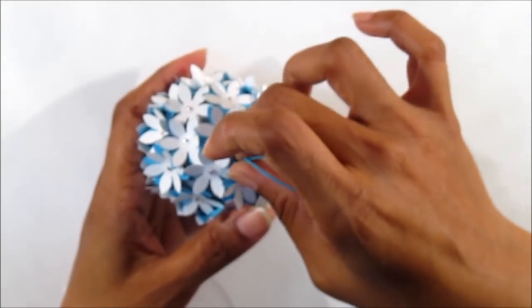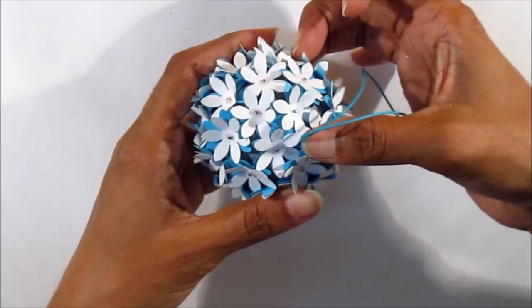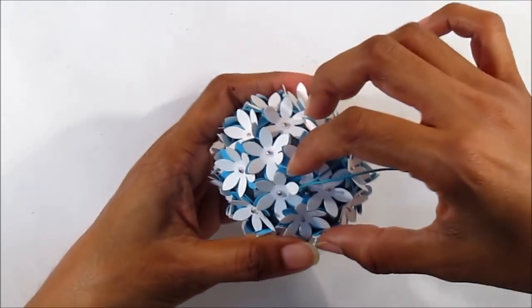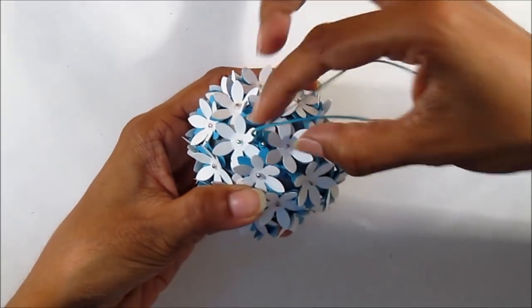Next, find a suitable gap between the flowers and push your alpen through them. And there you have it, your very own flower ball. Thanks for watching.